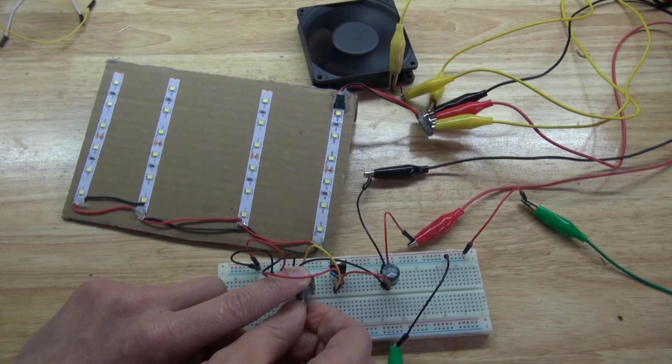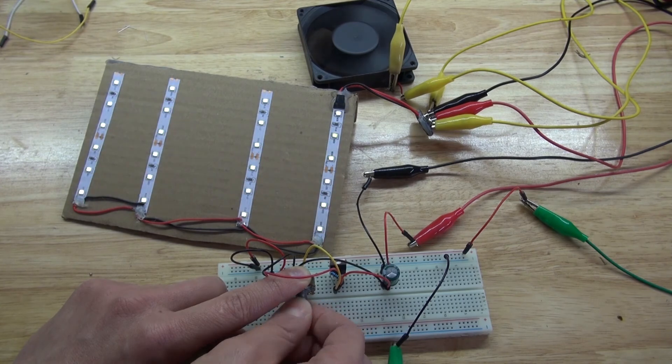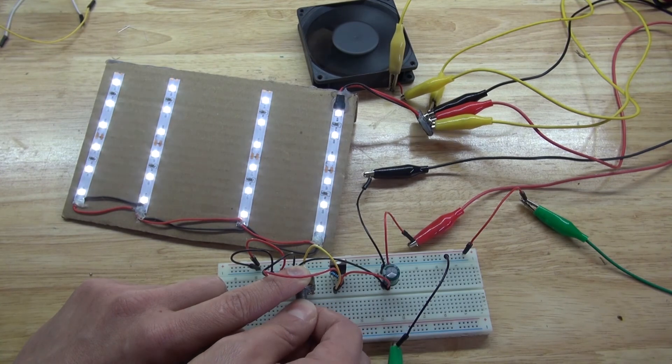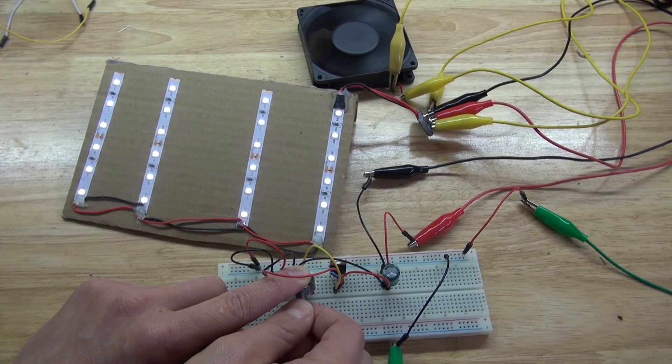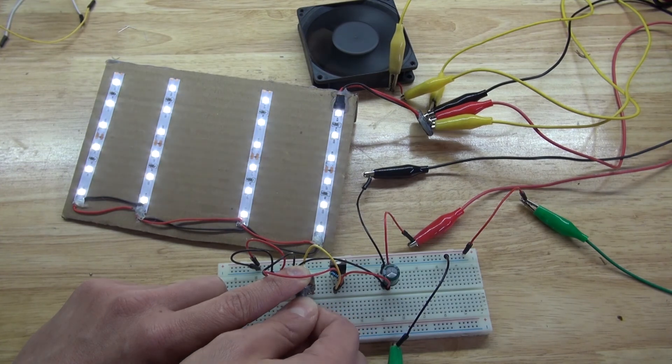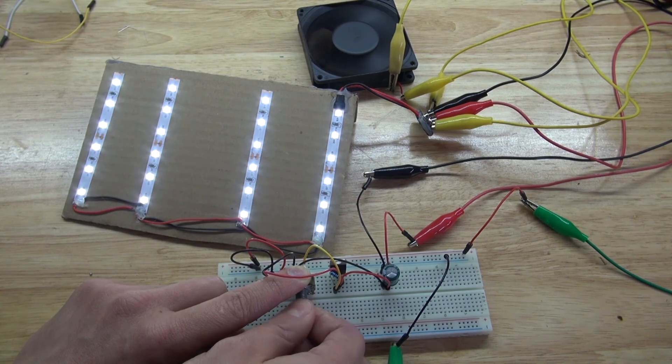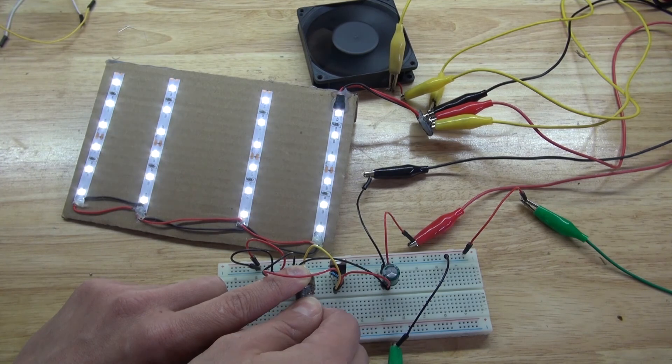And there you have it. Now you know how to use an LM317 transistor and a few other components to be able to control the brightness of an LED, or to control the speed of a fan. Thank you for watching SciTai Tech, I hope you learned something new, and don't forget to like, subscribe, and click on the bell icon to be notified for future SciTai Tech videos.